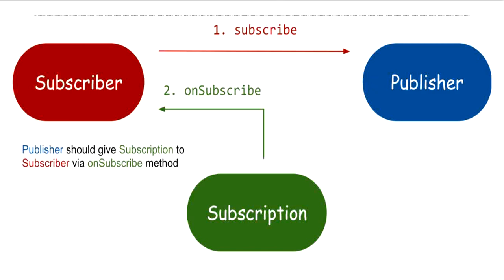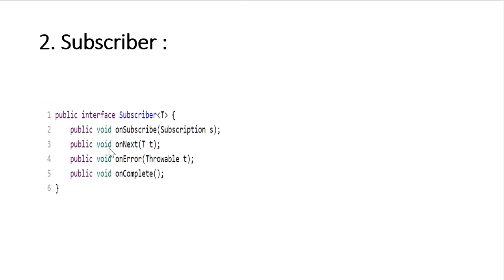For every data transfer between publisher and subscriber, the onNext event will execute. If all data transfers successfully, then the onComplete event will execute. But if there is any error or exception that occurs while processing records, then the onError event will execute.